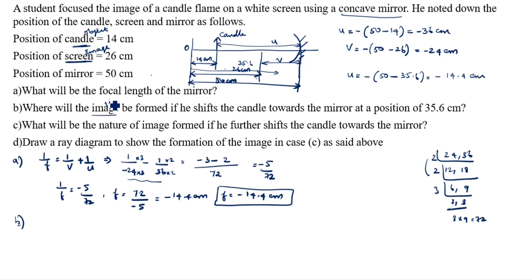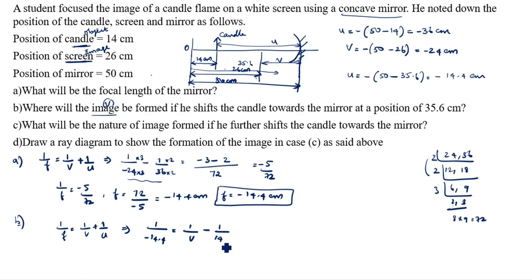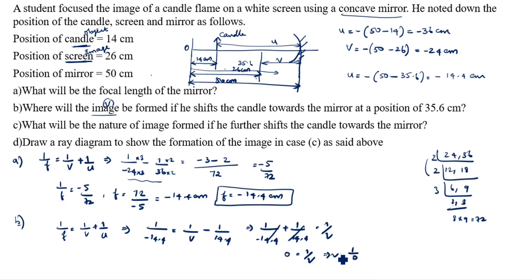Now we find the new v value. Using 1/f = 1/v + 1/u, with f = minus 14.4 and u = minus 14.4: 1/(−14.4) = 1/v + 1/(−14.4). Rearranging: 1/v = 1/(−14.4) + 1/(14.4) = 0. So 1/v = 0, which means v equals infinity. The image will be formed at infinity.